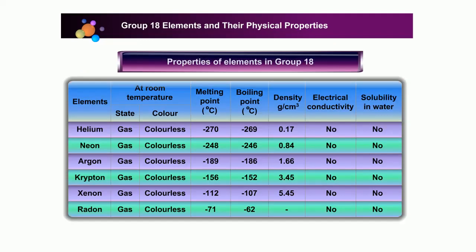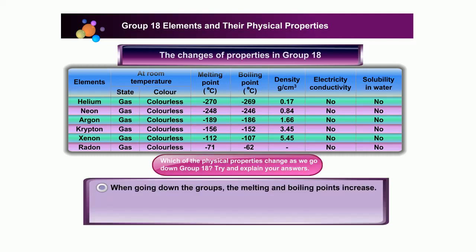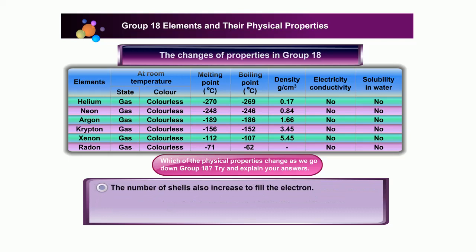Radon. Properties of Elements in Group 18 — look at the table showing the changes in physical properties in Group 18. When going down the group, the melting and boiling points increase. This is because when the number of protons increases, the number of electrons also increases. This results in the number of shells also increasing, so the atomic size or radius increases. The van der Waals' forces become stronger, thus more heat energy is needed to overcome these forces.